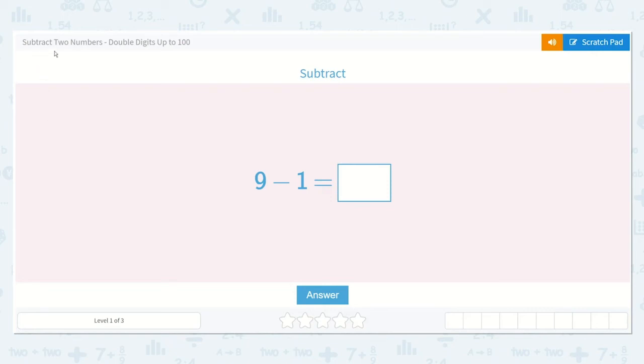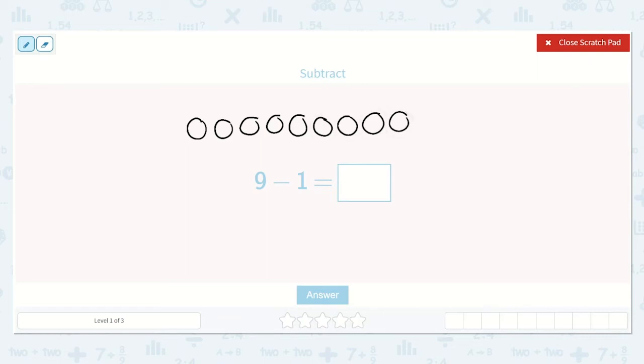Let's take a look at the lesson, subtract two numbers, double digits up to 100. It says subtract 9 minus 1. So we can draw 9 dots, 1, 2, 3, 4, 5, 6, 7, 8, 9,